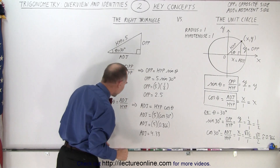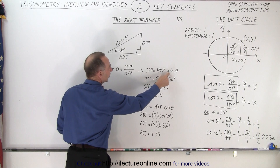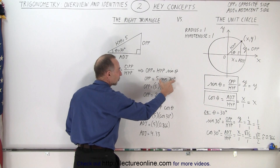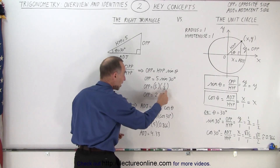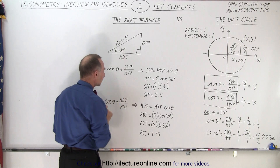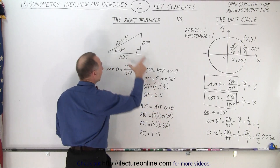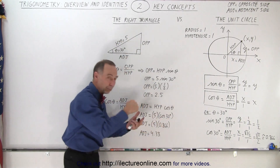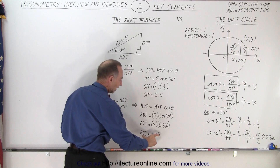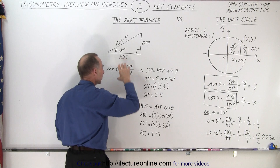Solving for the opposite side, it equals the hypotenuse times the sine of theta. The hypotenuse is 5 and the sine of 30 is 0.5, so the opposite side equals 2.5. For the adjacent side, it equals the hypotenuse times the cosine of theta. The cosine of 30 degrees is 0.866, so 5 times 0.866 is 4.33. Therefore the adjacent side has length 4.33 and the opposite side has length 2.5, found by using the sine and cosine ratios.